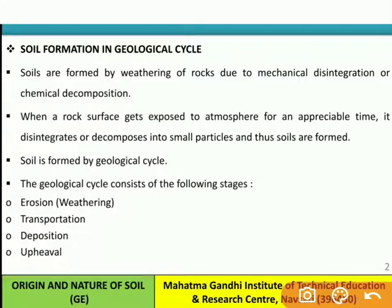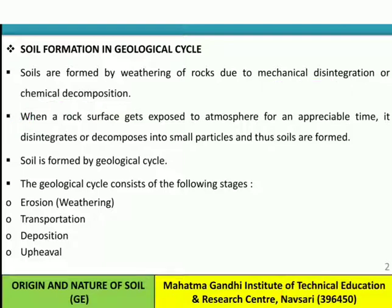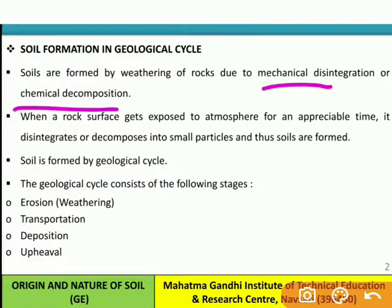Soils are formed by weathering of rocks due to mechanical disintegration or chemical decomposition. Whenever a rock surface gets exposed to the atmosphere for an appreciable time, it disintegrates or decomposes into smaller particles, and thus soils are formed. This decomposition occurs in two different manners: physical weathering and chemical decomposition. The geological cycle consists of the stages: erosion, transportation, deposition, and uplifting.